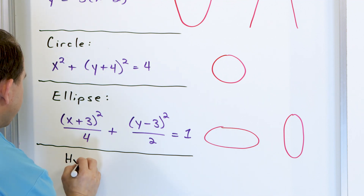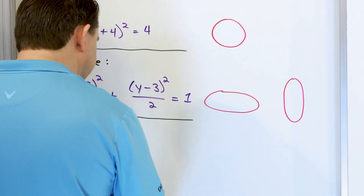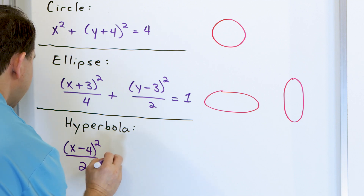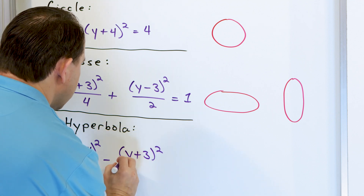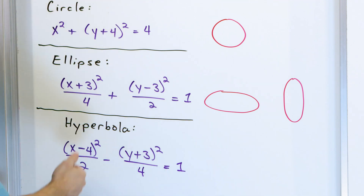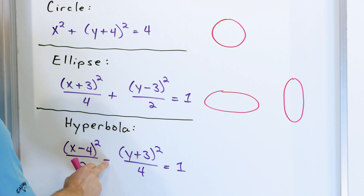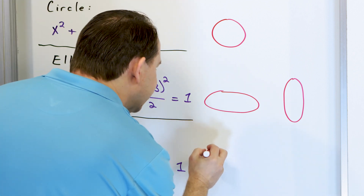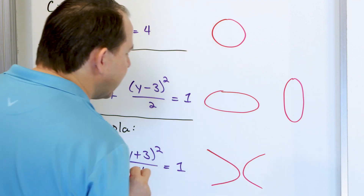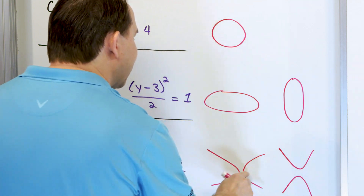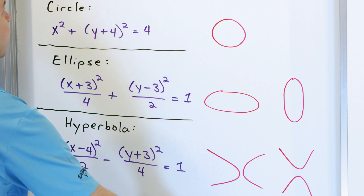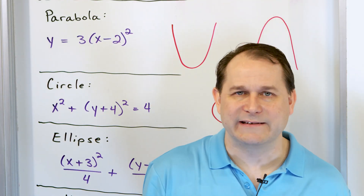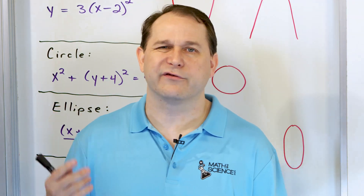The last conic section we studied is the hyperbola. An example might be (x − 4)²/2 − (y + 3)²/4 = 1. How do we know it's a hyperbola and not an ellipse? Because there's a minus sign linking the two terms, whereas the ellipse uses a plus sign. Hyperbolas can be horizontal or vertical versions. So on the board we now have lines, parabolas, circles, ellipses, and hyperbolas — all the conic sections.